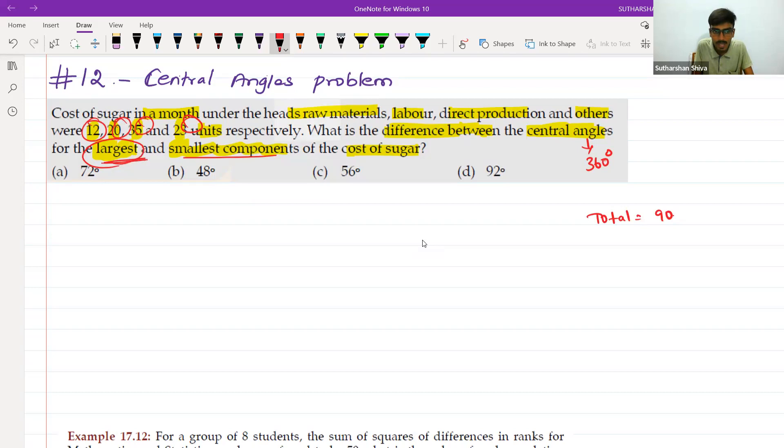They are asking about largest. What is the largest one? 35 is your largest one. So, take a calculator. 35 divided by 90 into 360 M plus.